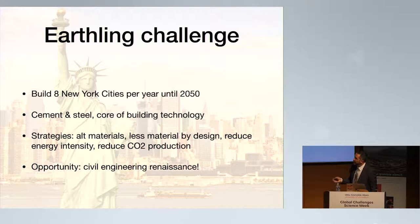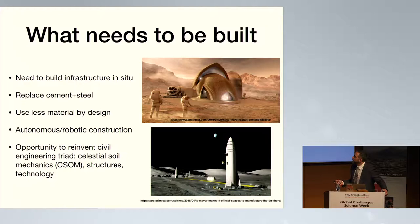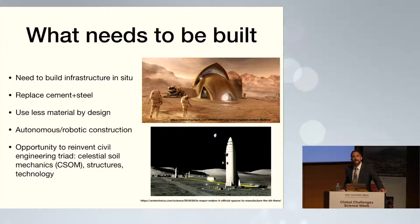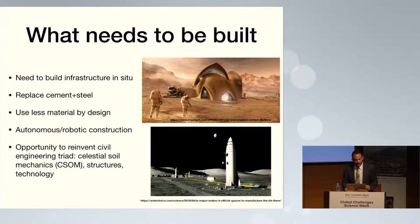This is very aligned with what you have to do if you want to build things on Mars. Here are concepts from SpaceX for outposts on the Moon and Mars. You need to build habitats and infrastructure. You don't have cement and steel on Mars or the Moon, and you can't bring them. So you're going to have to use less material and alternative materials by design, and all construction will have to take place robotically.